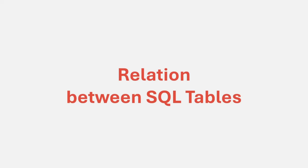Hello and welcome back. In the last few lectures, we created two entities for our NestJS application — a user entity and a profile entity. For those entities, tables are also generated in our PostgreSQL database. When working with a relational database like PostgreSQL, MySQL, or Oracle, we will always have a relation between two or more tables. For example, our user entity is related to the profile entity.